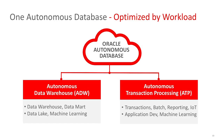Autonomous Database comes in two flavors, which are optimized for different types of workloads: Autonomous Data Warehouse, which is optimized for analytical workloads, and Autonomous Transaction Processing, which is optimized for transaction processing and mixed workloads.